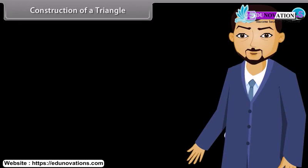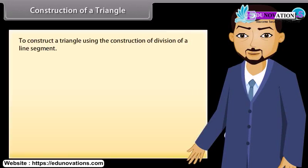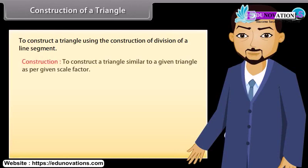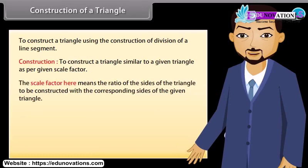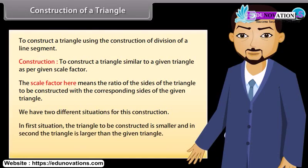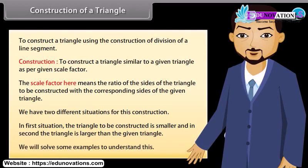We will now learn to construct a triangle using the construction of division of a line segment. To construct a triangle similar to a given triangle as per a given scale factor — the scale factor here means the ratio of the sides of the triangle to be constructed with the corresponding sides of the given triangle. We have two different situations: the triangle to be constructed is smaller, or the triangle is larger than the given triangle. We will solve some examples to understand this.